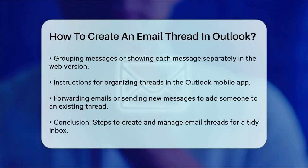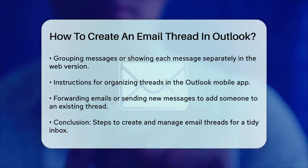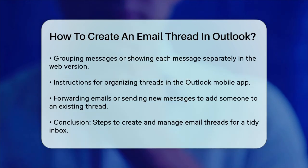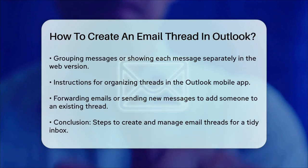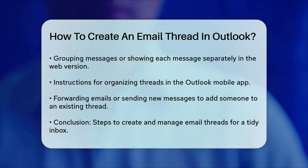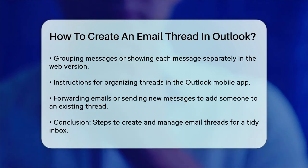On the Outlook mobile app, open the app, click on the profile icon, go into Settings, and locate the option to Organize by Thread. You can toggle this option on or off as needed.